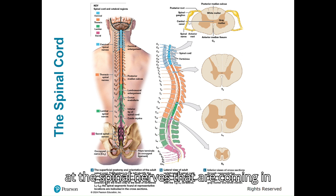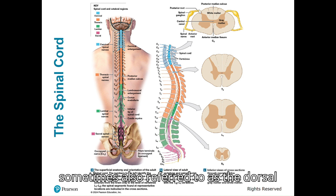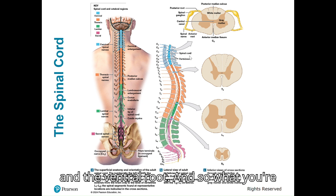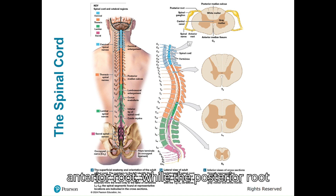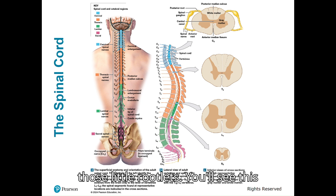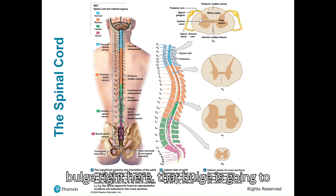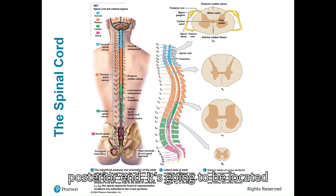When you look at the spinal nerves coming in and out of the spinal cord, you'll notice two roots — the anterior and the posterior root, sometimes also referred to as the ventral and dorsal root. The anterior root contains axons of motor neurons, while the posterior root contains sensory neurons. The spinal nerves divide into rootlets that enter and leave the spinal cord. There is a bulge on the posterior root called the spinal ganglia — sometimes also referred to as the dorsal root ganglia — which contains the cell bodies of those sensory neurons. It is located between the pedicles of the vertebra.